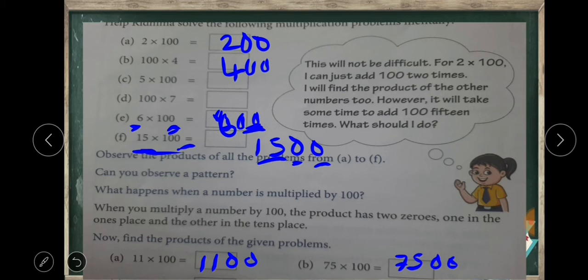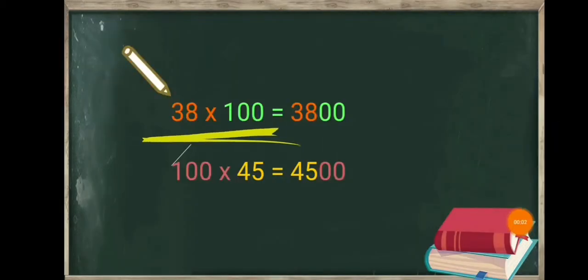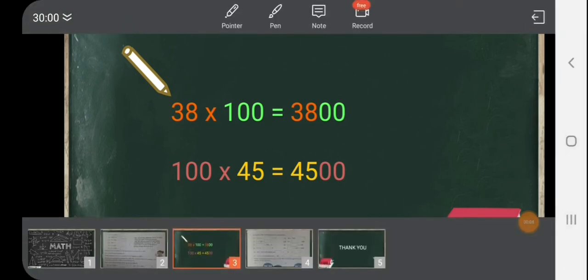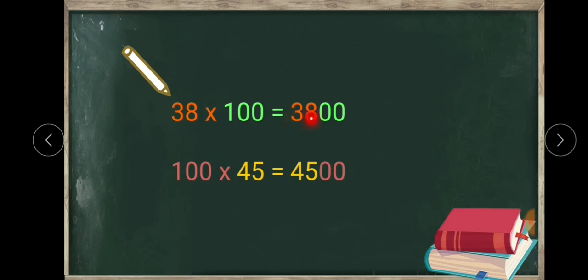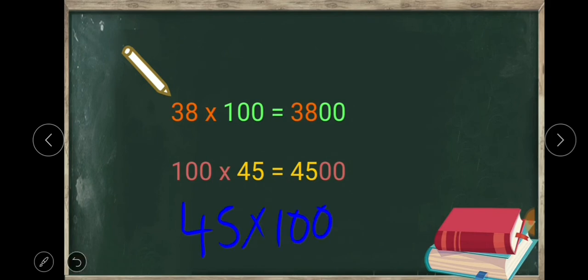Is it clear? Let's move. Here thirty-eight multiplied by hundred — we write thirty-eight and put two zeros in the product: one zero in the tens place and the other zero in the ones place. The same way, hundred multiplied by forty-five — we write forty-five and there are two zeros in hundred: one in the tens place and the other in the ones place.